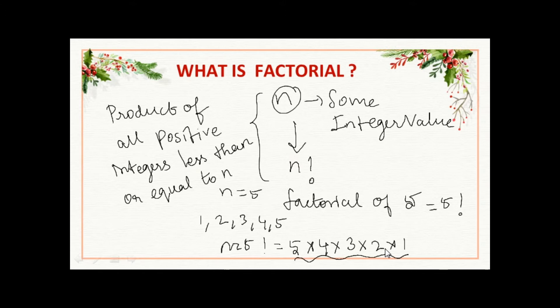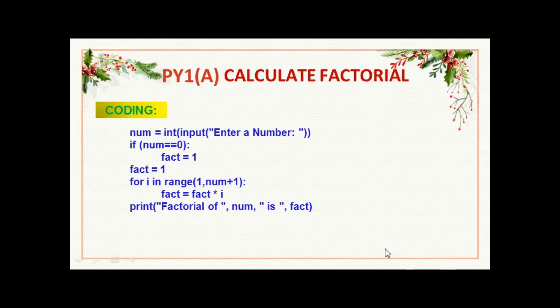Now we are going to find the factorial by using the Python program. This is our practical exercise 1a — calculate the factorial. The coding starts with: num equal to int of input of 'enter a number', which means user defined input — we are going to get the input from the user as an integer.